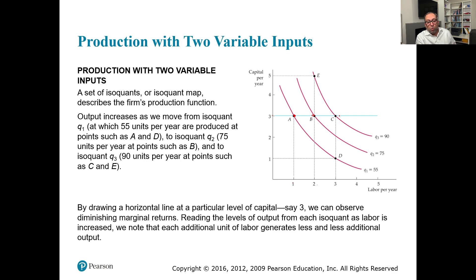The first isoquant is with 55 units of output. The second isoquant is with 75 units of output. The third isoquant is with 90 units of output. The shapes are very similar to an indifference curve. Output increases as we move from isoquant Q1 at 55 units per year at points A and D, to Q2 at 75 units per year at point B, to Q3 at 90 units per year at points C and E.